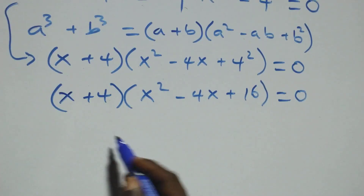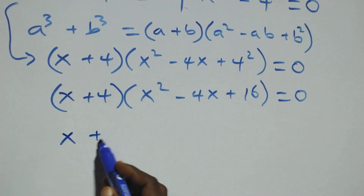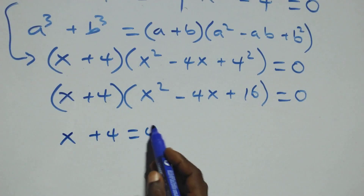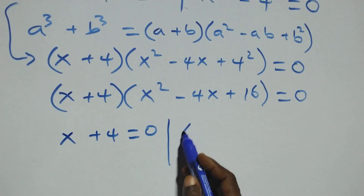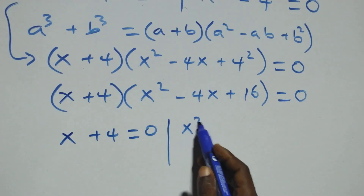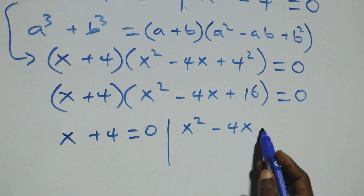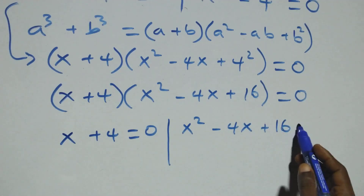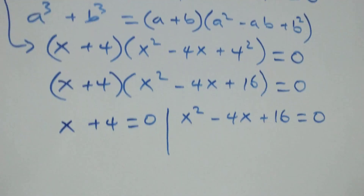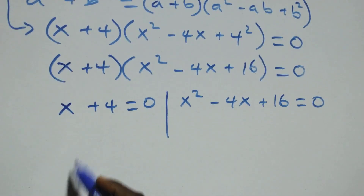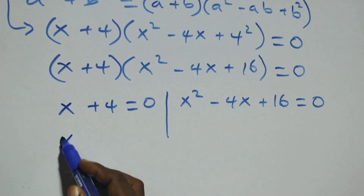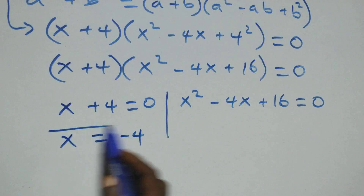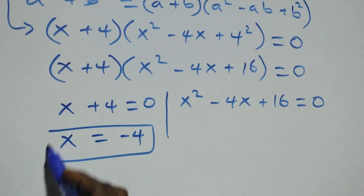We have two possible sub-cases: first, x plus 4 equals to 0, or we have x squared minus 4x plus 16 equals to 0. Solving the first, we have x equals to minus 4, which is a real solution.